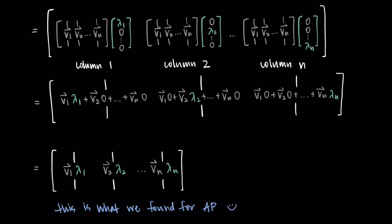We've shown that AP equals PD. I know this was very abstract and general, but hopefully seeing this process confirms why it works. We have this special relationship between eigenvectors and eigenvalues, and it allows us to write A as P D P-inverse.